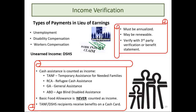For unearned income from DSHS, cash assistance is counted as income — this includes TANF, refugee cash assistance, general assistance, or age-blind-disabled assistance. Basic food is never counted as income. Note that TANF or DSHS funds are received on a cash card, which could itself be considered an asset.